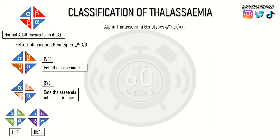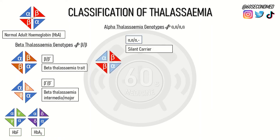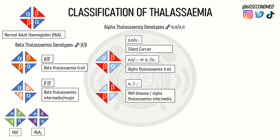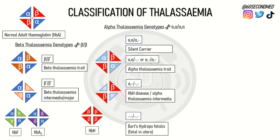Alpha thalassemia is due to deficiency of the alpha globin chain. The alpha globin chain is duplicated, so four copies exist in each cell. If one or two copies are affected, patients will have mild or no disease. If three copies are affected, the result is alpha thalassemia intermedia, also known as HbH disease, due to the presence of beta globin tetramers. The deletion of all copies of the alpha globin chain is not compatible with life.